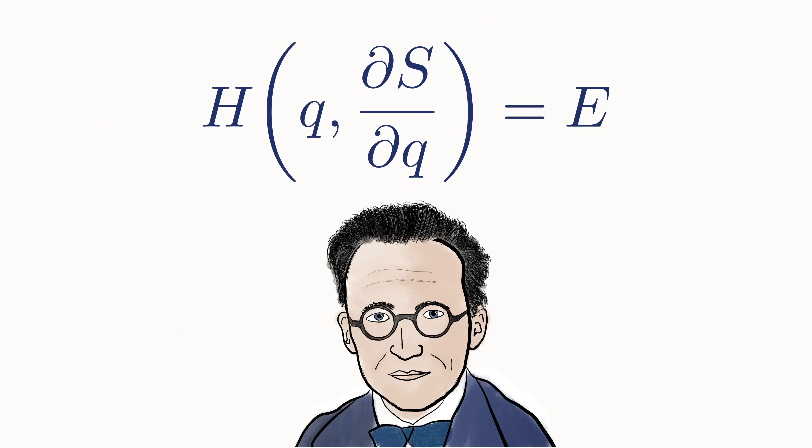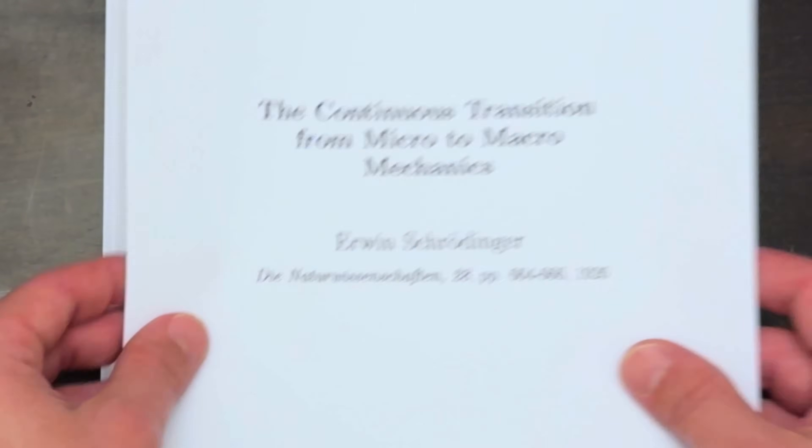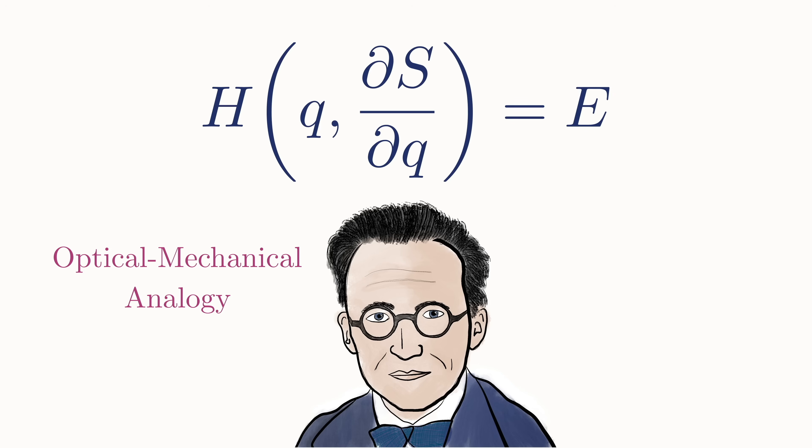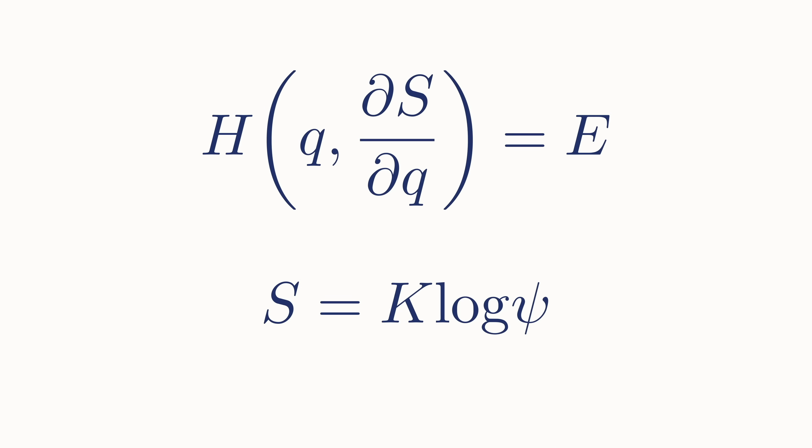The reason he starts here is because one of Schrödinger's main intellectual influences was Hamilton's optical-mechanical analogy. It is an analogy he comes back to again and again throughout his famous six papers. In fact, not only was he influenced by it, Schrödinger desired to complete the analogy in a way that Hamilton never dreamed of. The next step Schrödinger takes is to make a change of variables. He defines a new function psi that satisfies the following relation, where k is just some unknown constant that needs to have the dimension of action. So if we plug this in for S, the Hamilton-Jacobi equation takes on the following form.